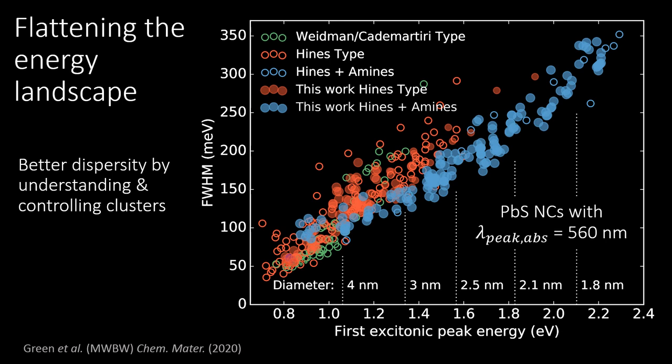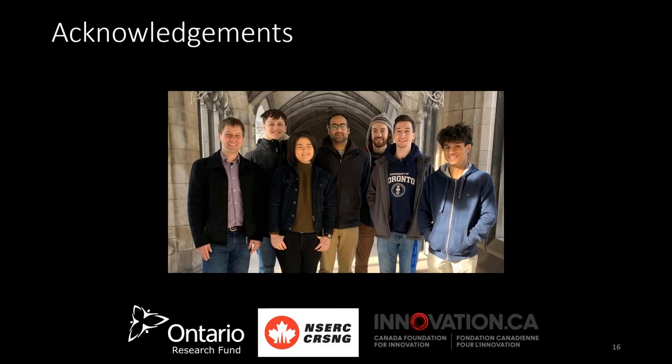Thus, we have shown that PbS nanocrystal synthesis involves a pre-nucleation cluster. This cluster is reproducible for many conditions. It competes with nanocrystal nucleation, yielding large nanocrystals at completion. However, using amines or glycol ethers, the cluster can efficiently be manipulated to yield any size at reaction completion with record dispersity. This work highlights the role of competing agents to control the rates involved in the formation of nanocrystals. Finally, I would like to thank the Wilson Group at the University of Toronto, the organizers of the conference, and all the people who listened. Thank you.